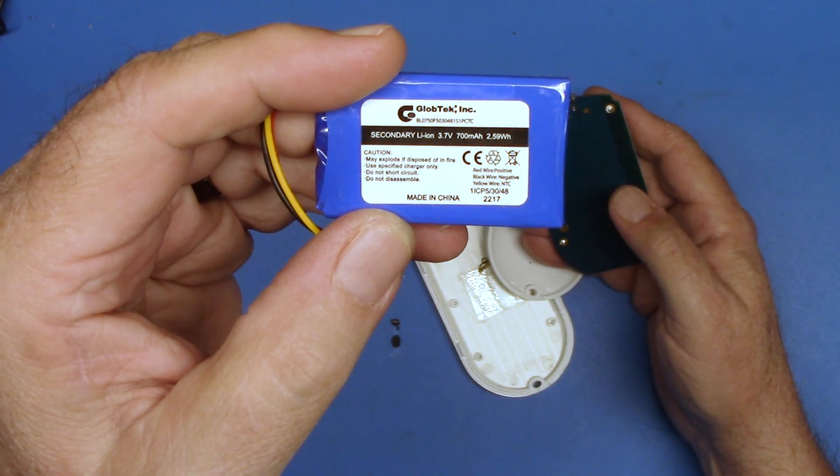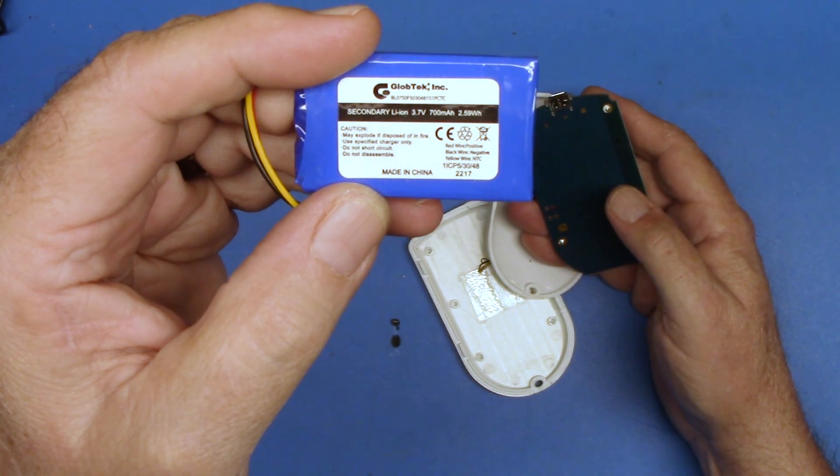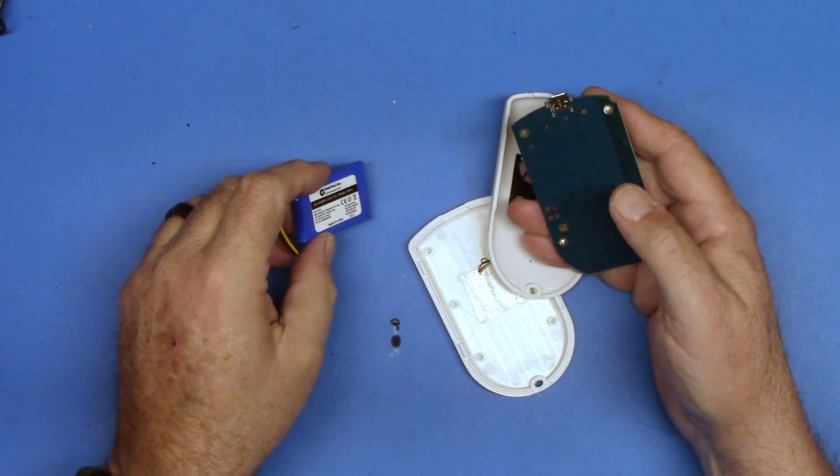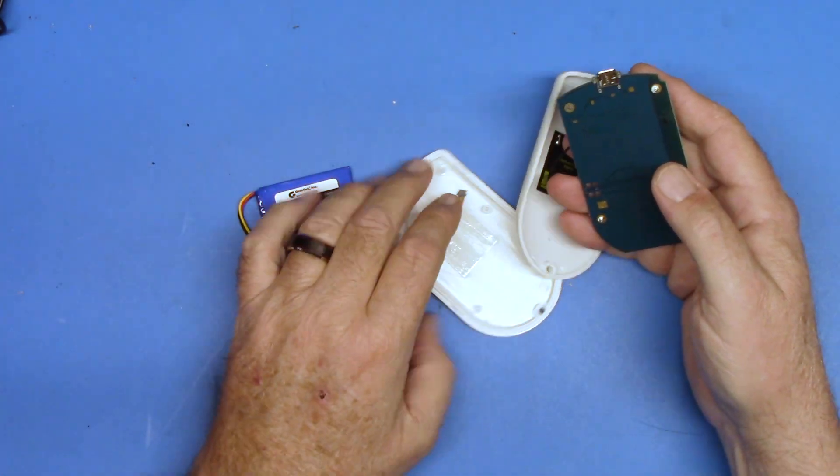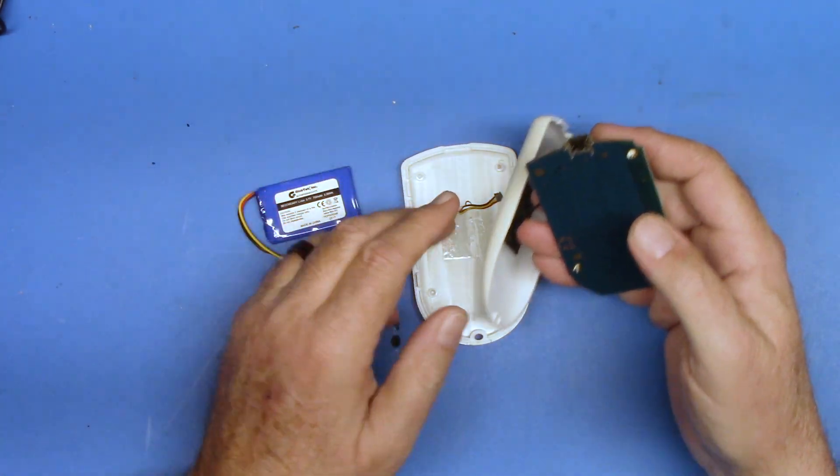The voltage specs and all that are the same. It's 3.7 volts, 700 milliamp hours. So that's what I want to do is try and replace the battery in this.